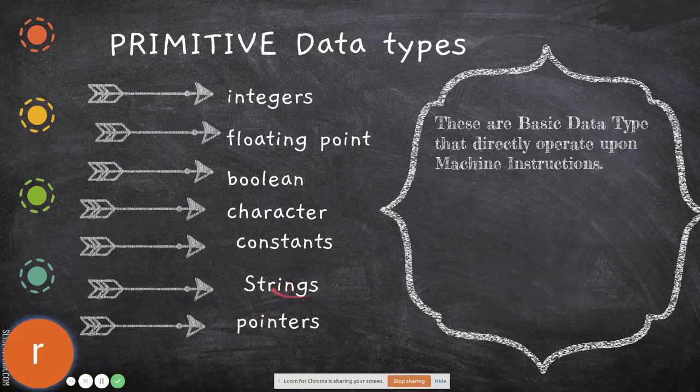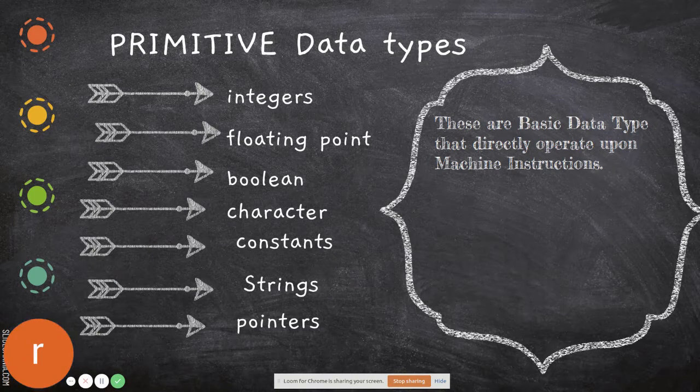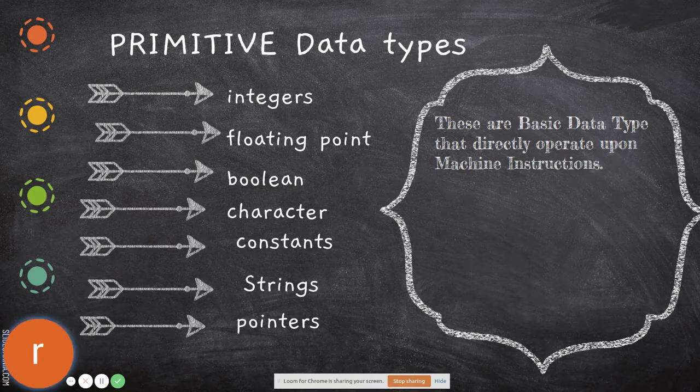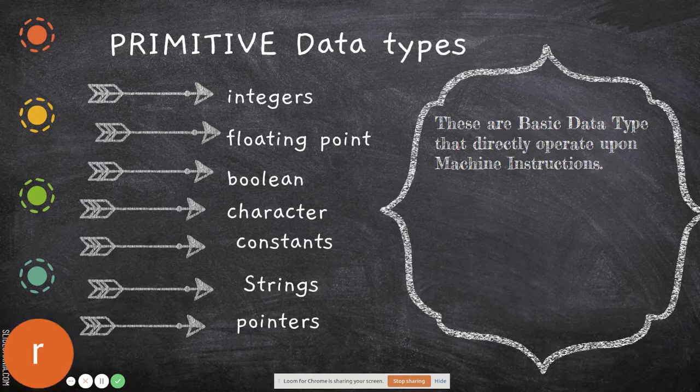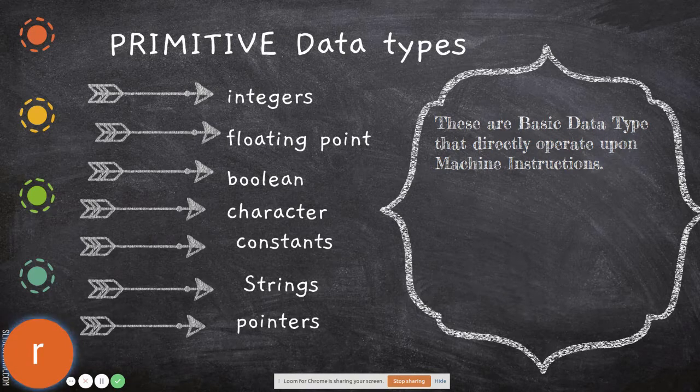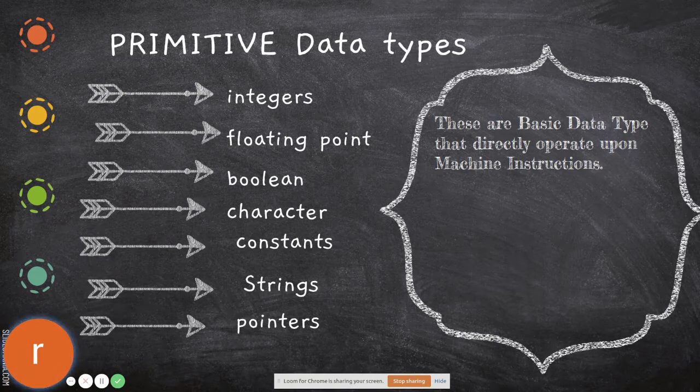Strings are combinations of characters, whereas a character is only a single character. For example, if you say 'Welcome', it consists of the characters W, E, L, C, O, M, E - seven characters total. All these together form a string. Pointers directly point to memory locations and we can directly manipulate the data stored in those memory locations.